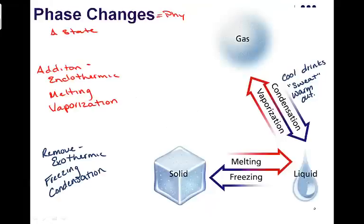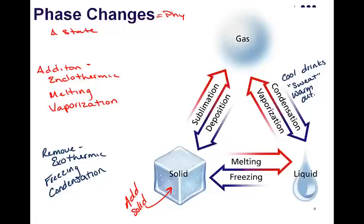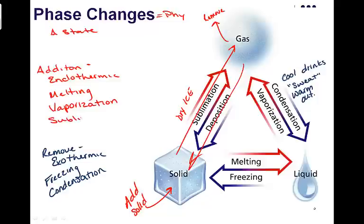Our last set of phase changes occurs between a gas and a solid. If we add heat to a solid and that solid turns directly into a gas, an example would be something like dry ice, which is solid CO2. What we say is that it sublimates into a gas. It doesn't go through the liquid form, it goes straight into the gaseous form. Now if we take that CO2 gas and we remove heat and it doesn't pass through the liquid form, we say that it deposits. It undergoes deposition. So sublimation and deposition are our six phase changes.